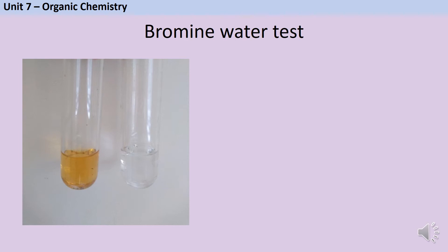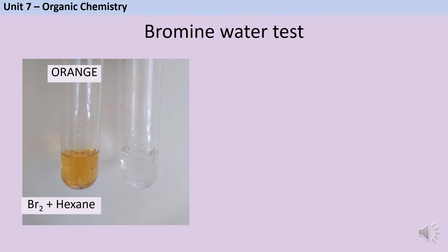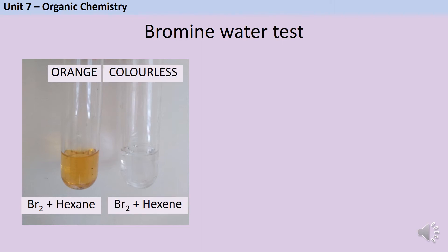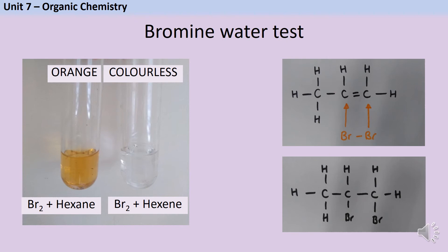Before it reacts with any other chemicals, bromine water is a transparent orange liquid. If you mix it with an alkane no chemical reaction happens and so it stays orange. If you mix bromine water with an unsaturated molecule such as an alkene then it turns colourless. The orange colour comes from the bromine molecule and specifically the bromine-bromine bond. This bond absorbs blue light, so if you take white light and remove the blue light, the light transmitted is orange. After the bromine molecule attacks the carbon-carbon double bond, a new molecule is formed and there is no longer a bromine-bromine bond, so nothing absorbs the blue light and the transmitted light is no longer orange.